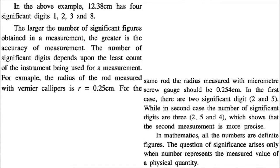In this example, we have 4 significant figures: 1, 2, 3, 8. The larger the number of significant figures we obtain in a measurement, the greater is the accuracy. The number of significant digits also depends on the least count of the instrument. For instance, a radius measured with a vernier caliper gives R = 0.25, but measured with a screw gauge it can go up to 0.254 — giving 3 significant digits, which shows greater precision.